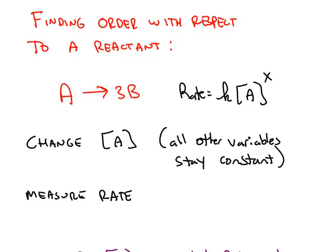We've been talking about the order of a reaction, the order with respect to each reactant. So here's an overall reaction: A turns into 3B. We're trying to find this order, X, with respect to chemical A.